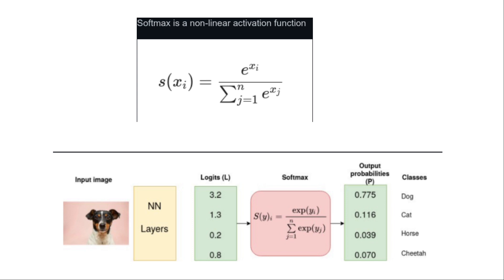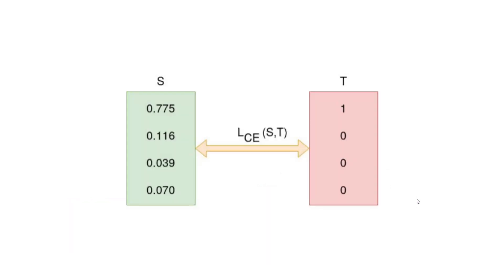Now, what is softmax? Softmax is a function that takes a list of unbounded values as input and outputs a valid probability mass function with the relative ordering maintained. This means the maximum element in the input to softmax corresponds to the maximum element in the output. For example, an input image goes through many layers of a neural network producing unbounded output values, which then pass through softmax to yield bounded probabilities that always sum to one. The highest probability corresponds to the predicted class — for instance, 'dog'.